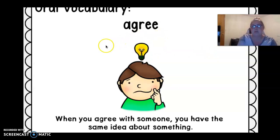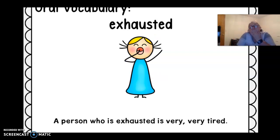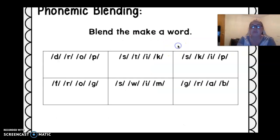Oh, do you remember this one? Agree. When you agree with someone, you have the same idea about something. Alright. Oh. Difficult. If something is difficult, it is hard to do or full of problems. Oh, exhausted. Oh, give me a big yawn, a big stretch. A person who is exhausted is very, very tired.